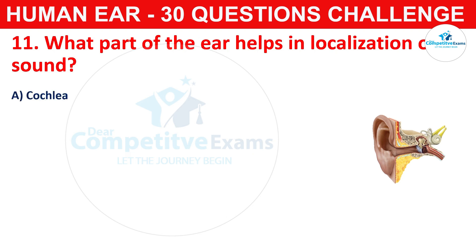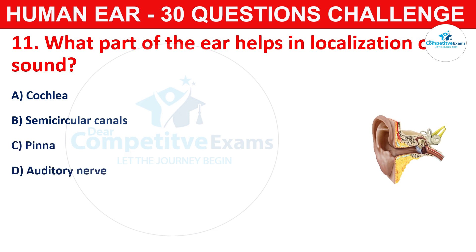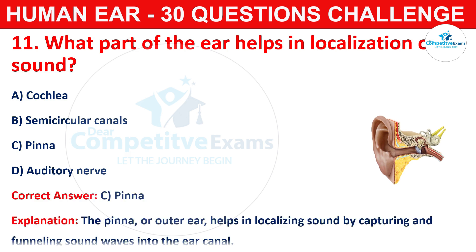Question number eleven: what part of the ear helps in localization of sound? Your options are cochlea, semicircular canals, pinna, or auditory nerve. The correct answer is C, that is pinna. The pinna, or outer ear, helps in localizing sound by capturing and funneling sound waves into the ear canal.